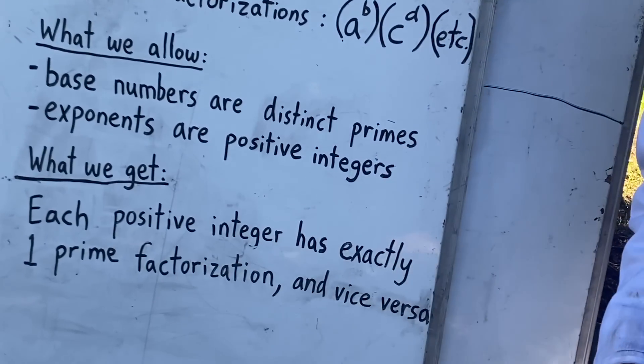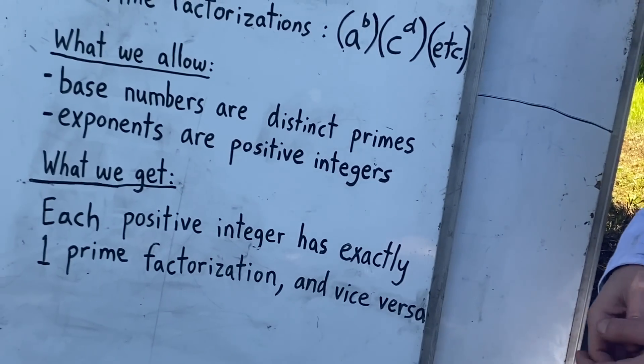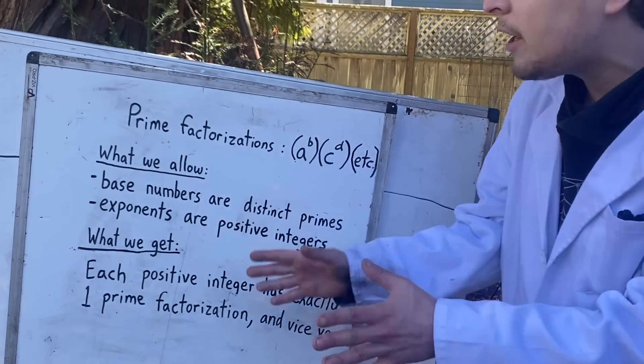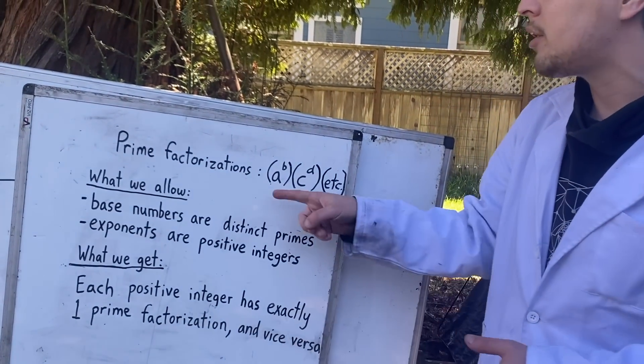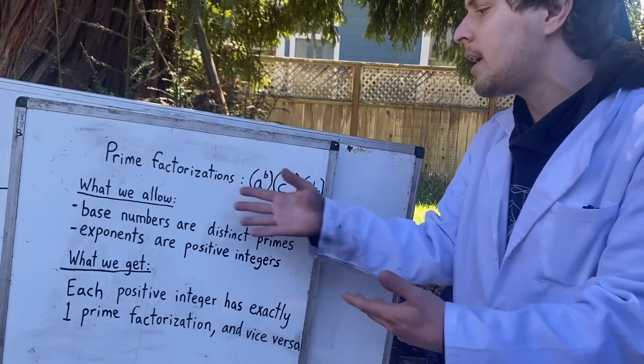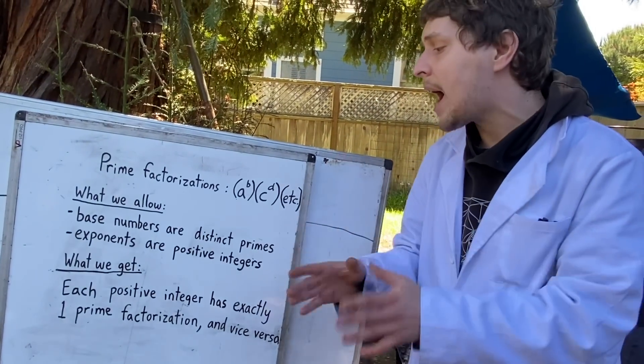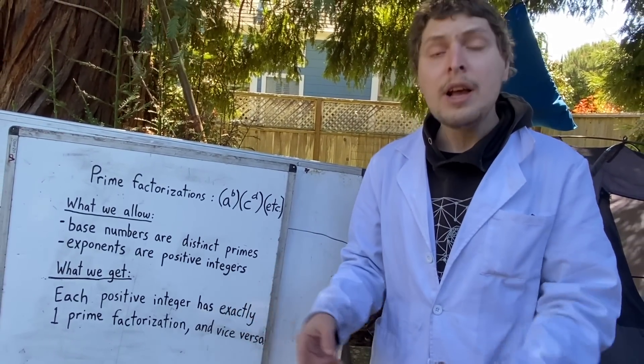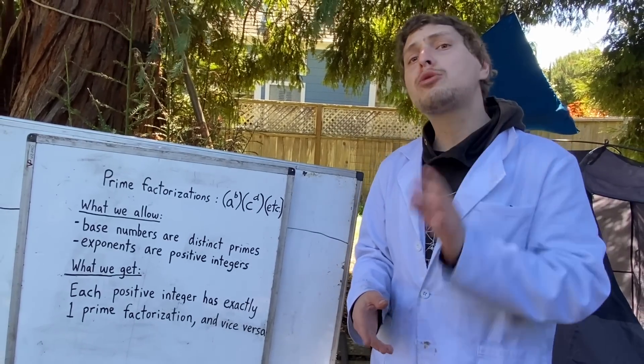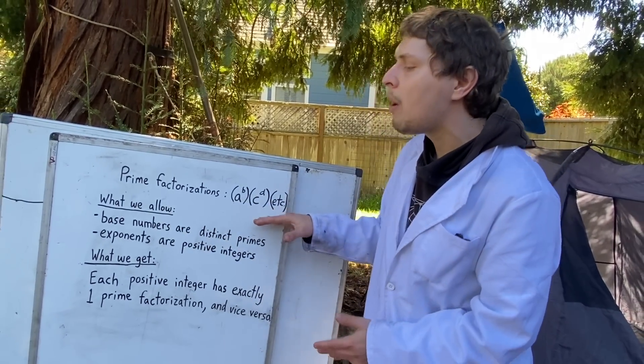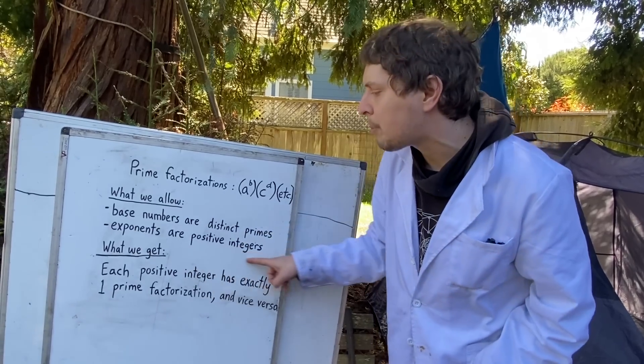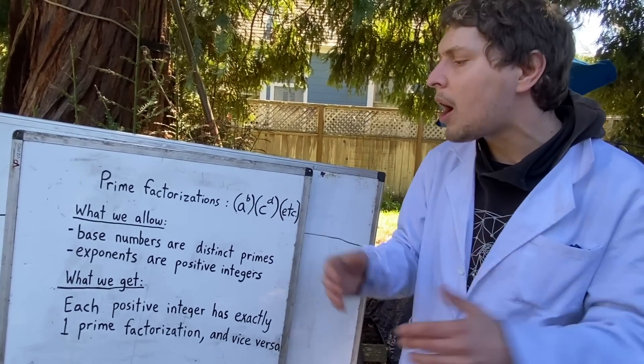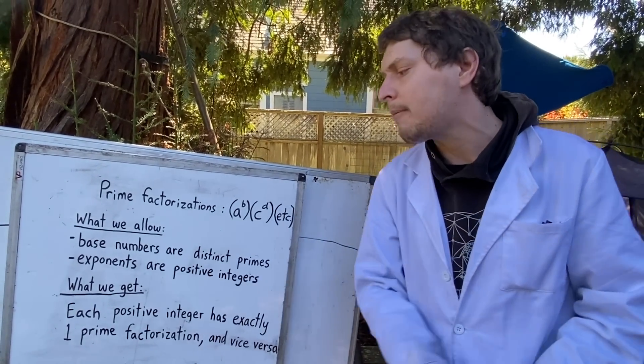No positive integer will have multiple prime factorizations or be lacking one. And it also works the other way around too, where any prime factorization you could invent or imagine that follows these rules will line up with exactly one positive integer. And that turns out to be a really useful property. So let's say today we're going to try and make some changes to what we allow without losing the property that all of the positive integers lined up in a one-to-one unique way with the prime factorizations.